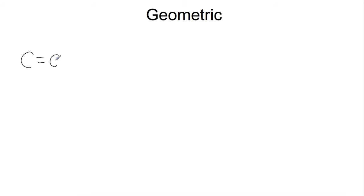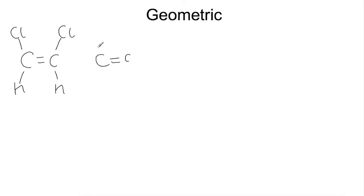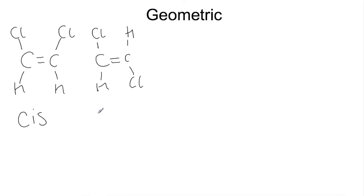If we look first at double bonds, I'm going to draw 1,2-dichloroethene. To draw 1,2-dichloroethene, you can have both of the chlorines on the same side of the molecule, or they can be on opposite sides of the molecule. When they are on the same side of the molecule, this is the cis isomer.